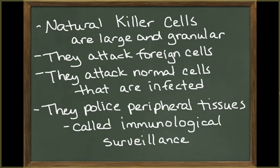Natural killer cells are large and granular lymphocytes. They attack foreign cells, and they also attack normal cells infected with viruses and cancer. They continually police the peripheral tissues, which is called immunological surveillance.